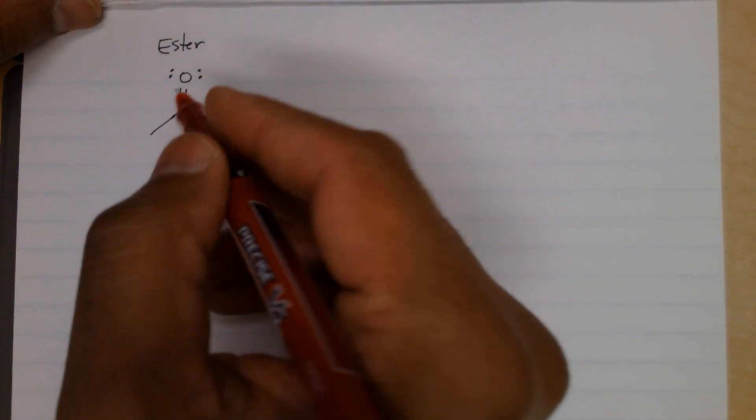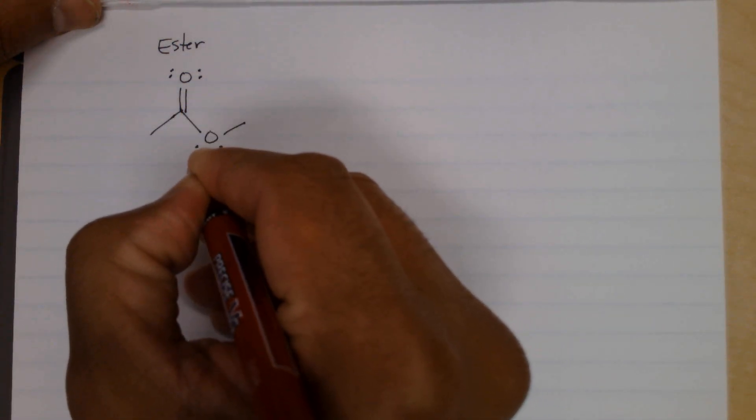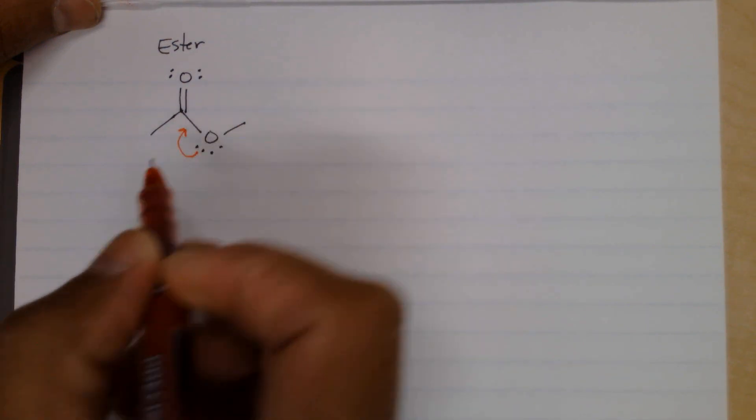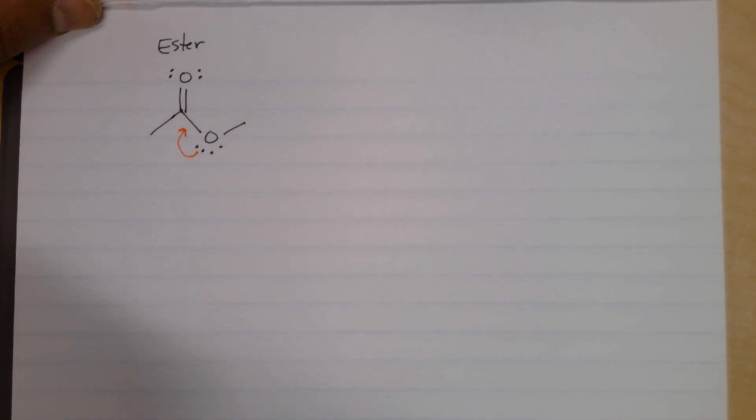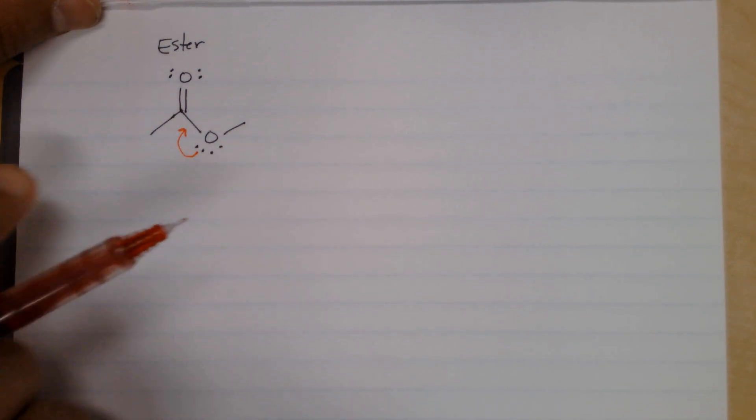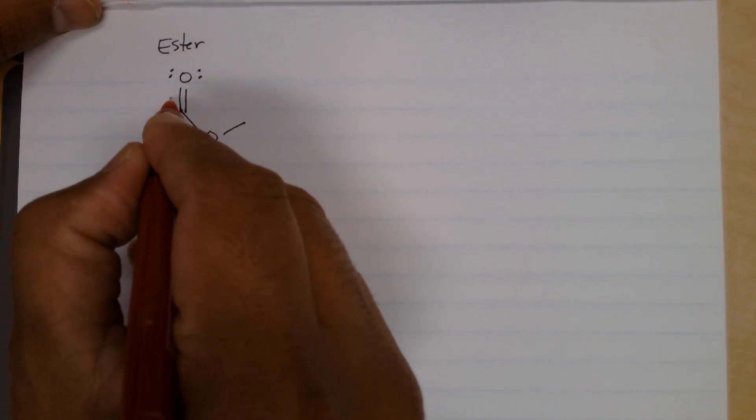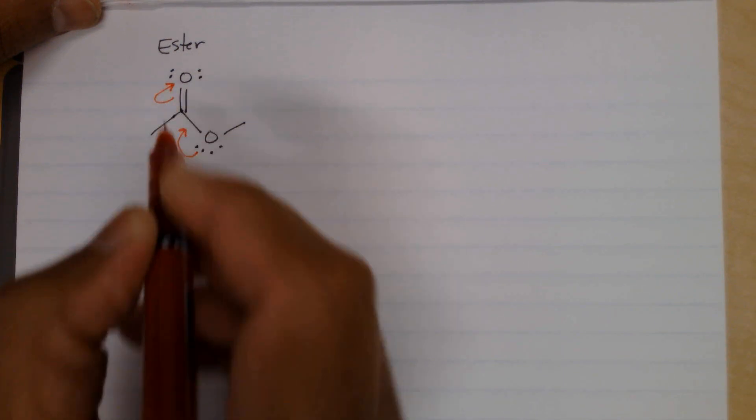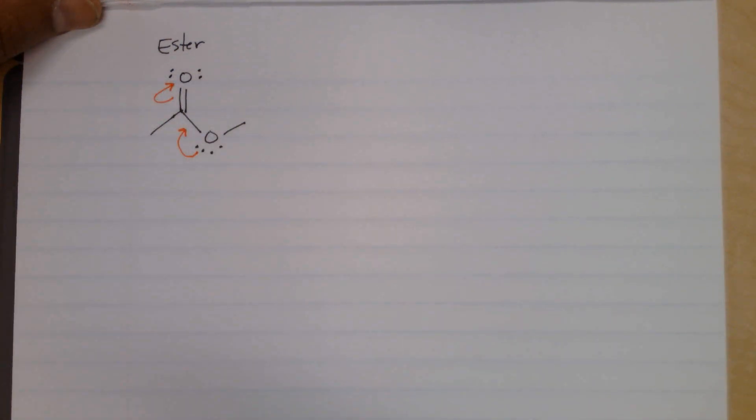So here's another two-arrow process. We can take a lone pair, move them in between the atoms, so we're going to draw a double bond here, and then pi electrons here pointed towards the atom where they're going.